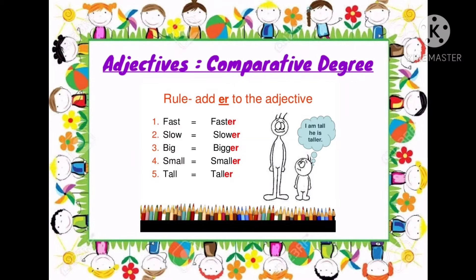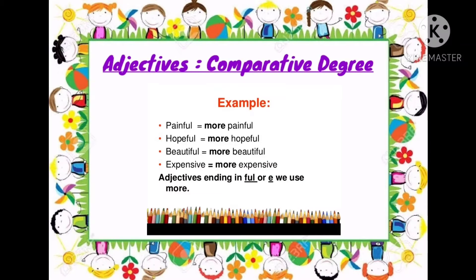So the simplest way of recognizing comparative degree adjectives is that they have ER at the end. Another way is we use 'more' with some adjective words — for adjectives ending in -FUL or -E, we use the word 'more' to change them into comparative degree. For example: painful becomes more painful, hopeful becomes more hopeful, beautiful becomes more beautiful, and expensive becomes more expensive. So we change adjectives into comparative degree either by adding ER or by using the word 'more'.